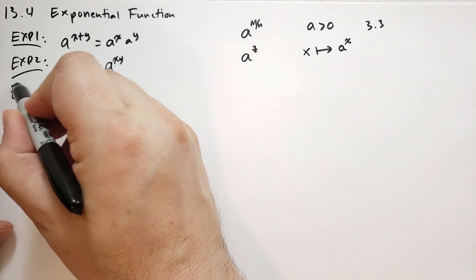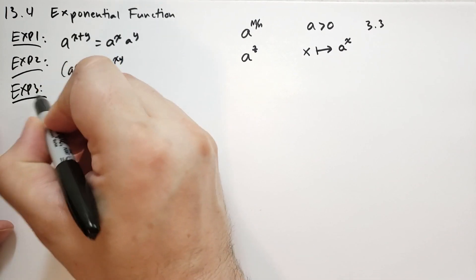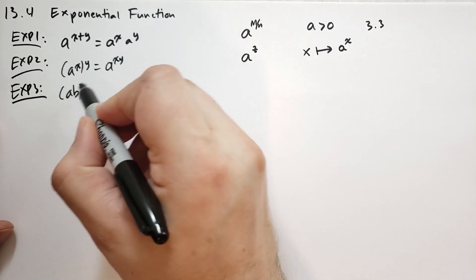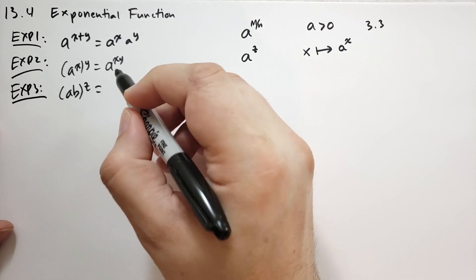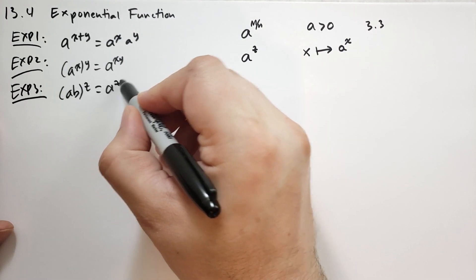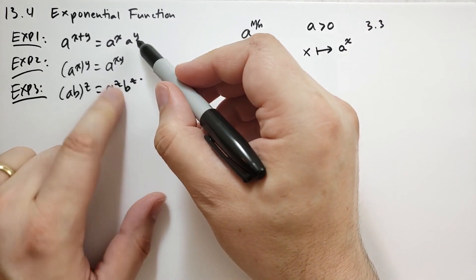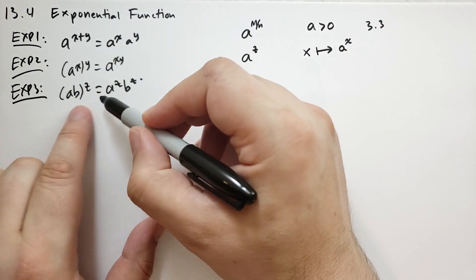And then we have rule EXP3 that says if a and b are positive, then (ab)^z is equal to a^z times b^z. This one's different than EXP1 because EXP1 we have the same base. In this case we have different bases.